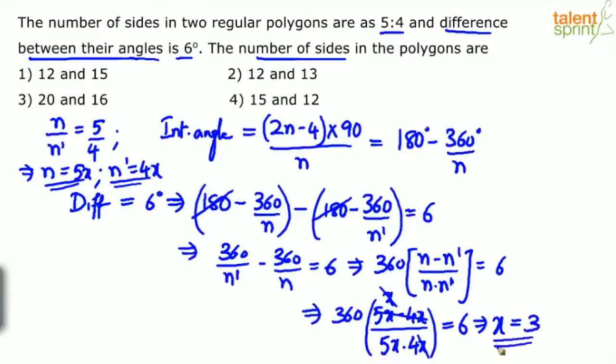The number of sides: n = 5x = 5×3 = 15, and n' = 4x = 4×3 = 12. So 15 and 12, option 4 would be the answer.